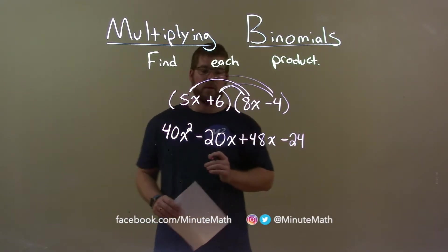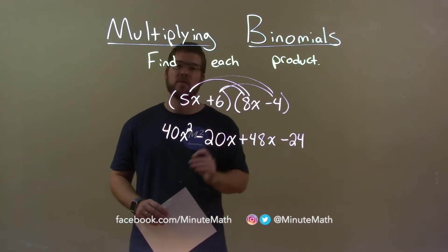We now want to combine our like terms, which is just the minus 20x and plus 48x.